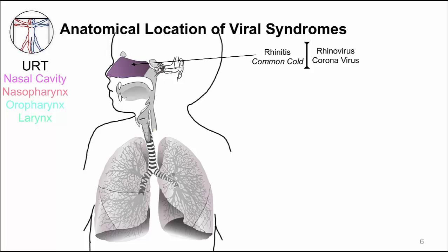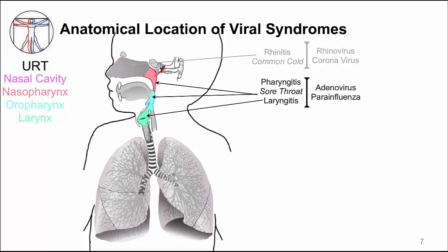The typical viruses that cause rhinitis are rhinovirus and coronavirus. Further down the upper respiratory tract is the nasopharynx, oropharynx, and vocal cords. When this area is infected, we get clinical syndromes of sore throat and hoarseness, and we term these pharyngitis and laryngitis. The viruses that typically infect these locations are different than those that infect the nasal cavity. Adenovirus and parainfluenza virus are the most prominent viruses.